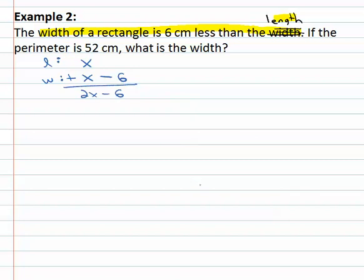For perimeter, we take length plus width, and then we have to multiply the solution by two to equal the perimeter. What is the perimeter? 52 centimeters.